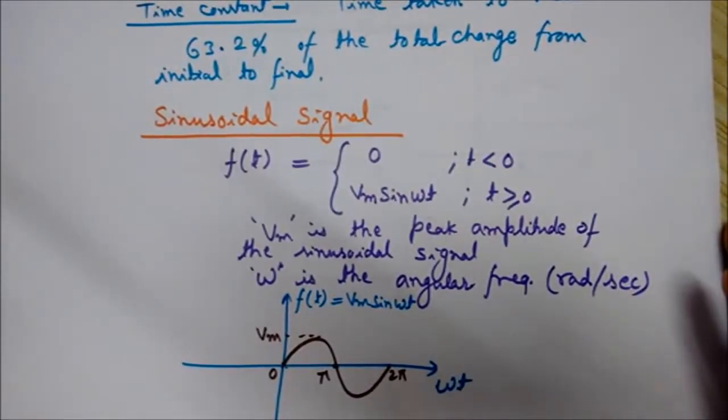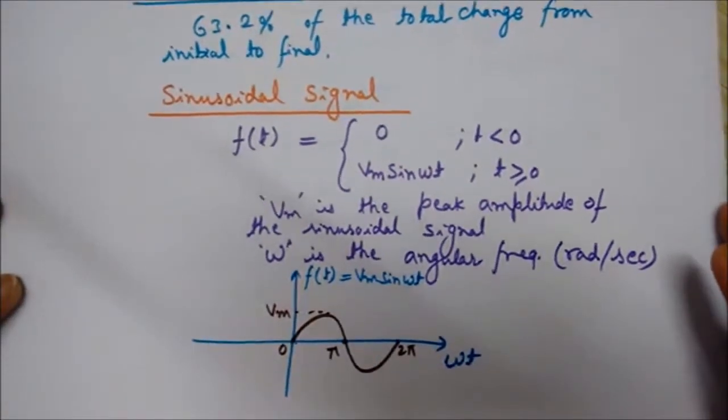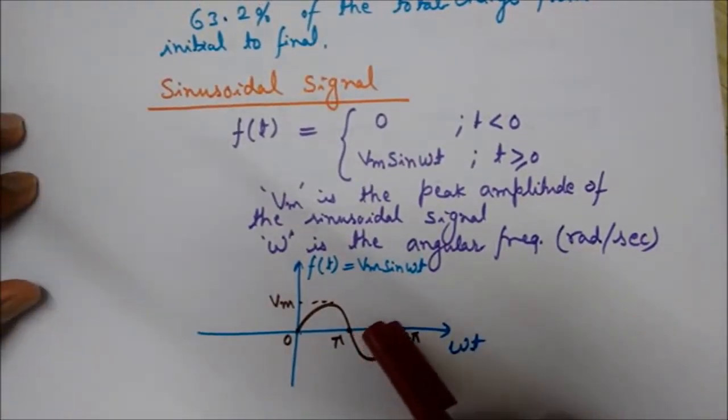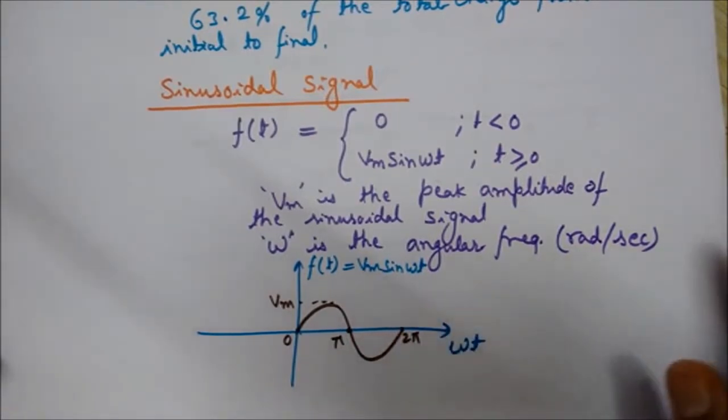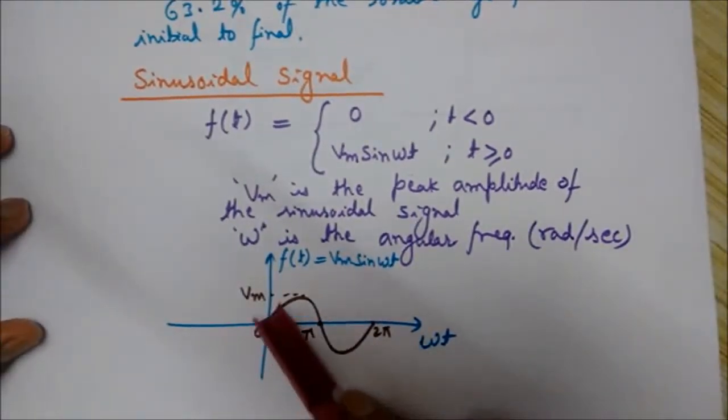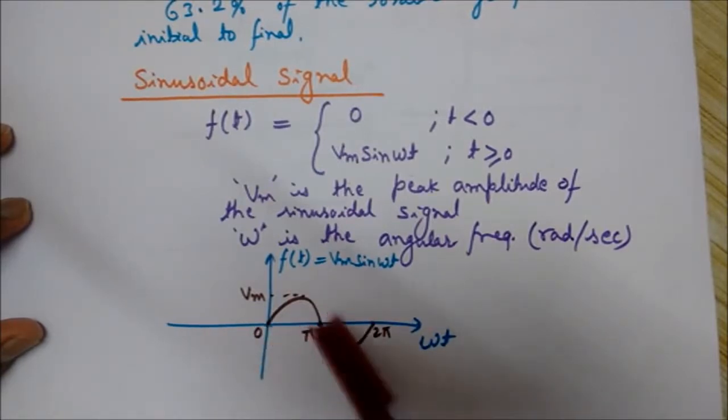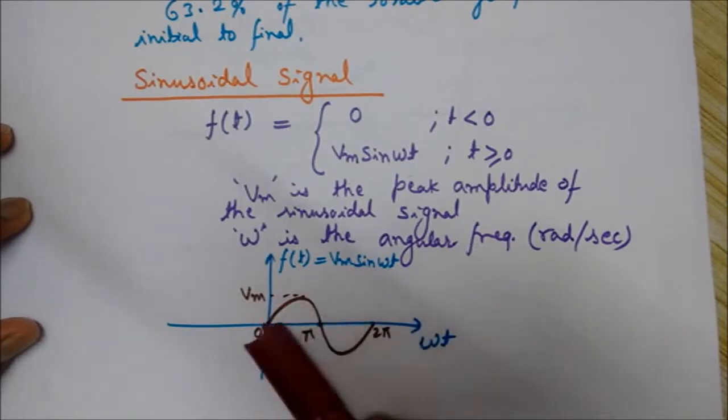Here is the graph of this sinusoidal signal. You can see the shape - at 0, π, and 2π, the signal cuts the x-axis, meaning its value is zero at these points.